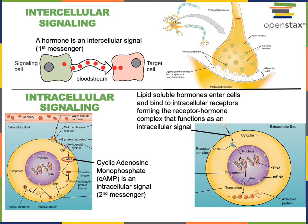One example of a function influenced by the intracellular signal cyclic AMP is the force of contraction of cardiomyocytes in the heart. Cyclic AMP can stimulate opening of calcium ion channels, leading to increased contractility — increased force of contraction of the heart muscle.